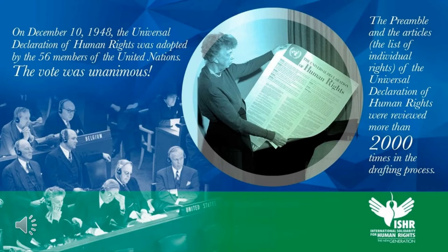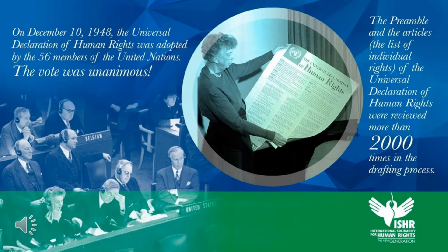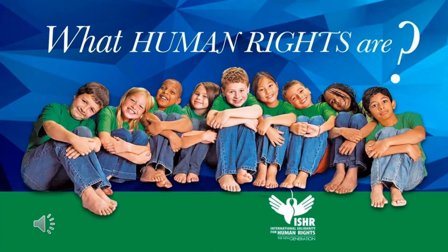On December 10th of 1948, the Universal Declaration of Human Rights was adopted by 56 members of the United Nations. The vote was unanimous. The preamble and articles, which is the list of individual rights, were revised more than 2,000 times in the drafting process. Please remember this very important date: December 10th, 1948.